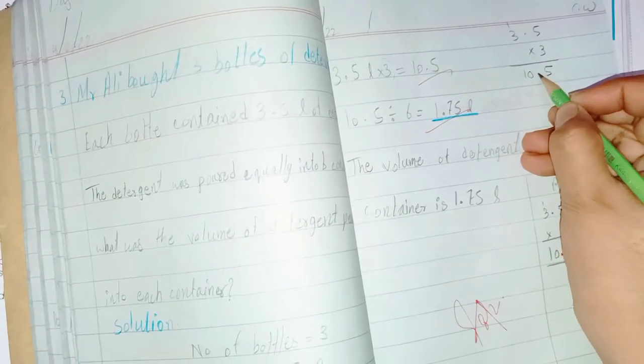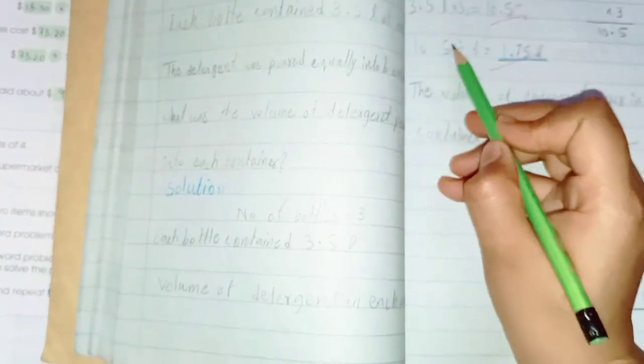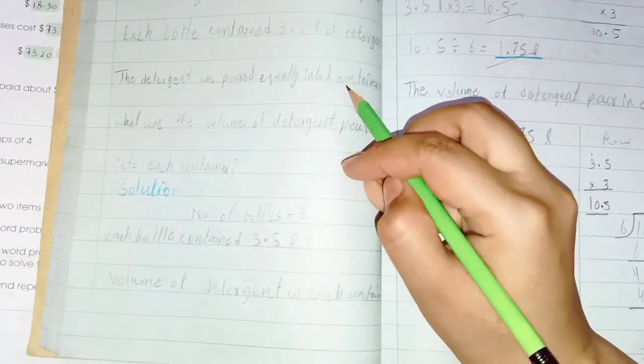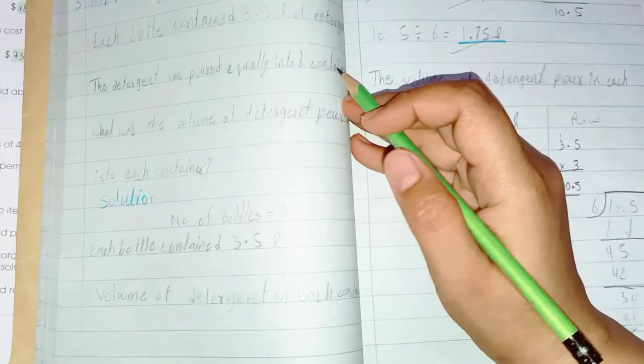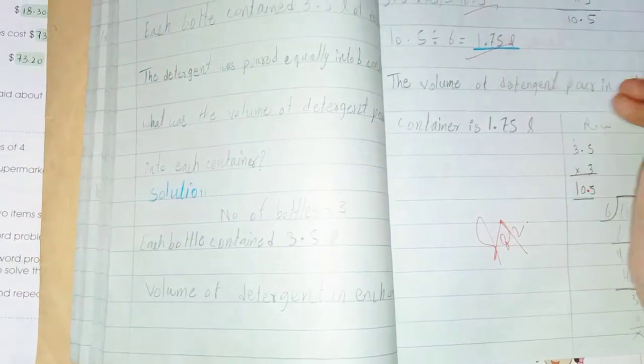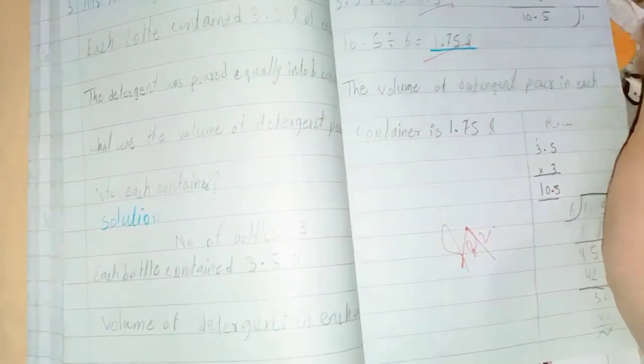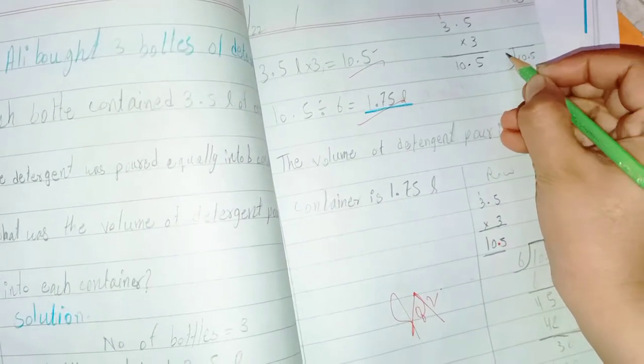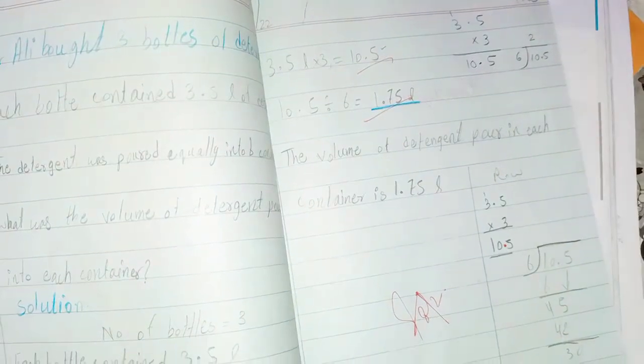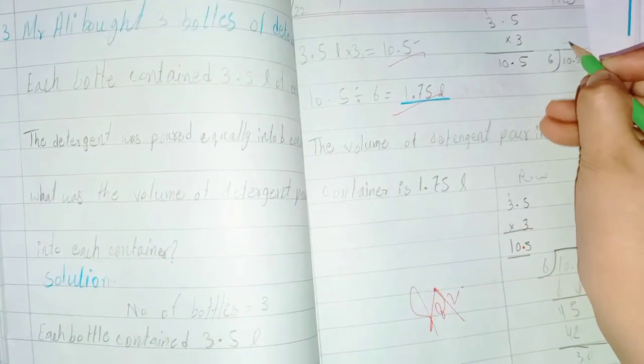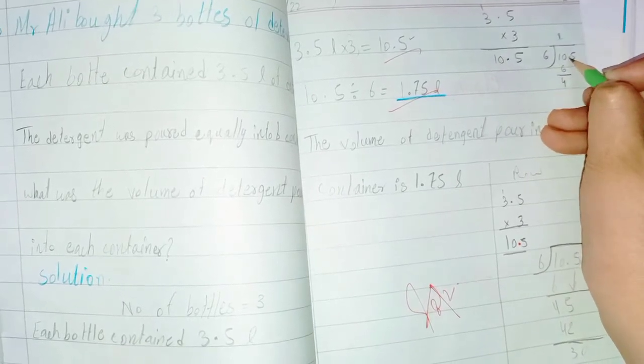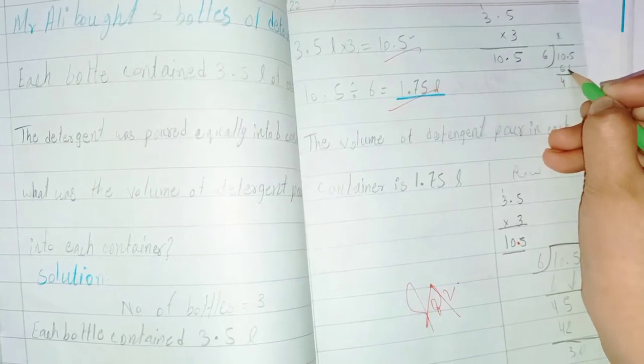Now 10.5 is the total volume in the bottles. We have to divide this volume into 6 equal containers. To divide into 6 equal containers, we divide 10.5 by 6. 6 ones are 6, put 4 here. Before we take this 5, we should take the decimal up.